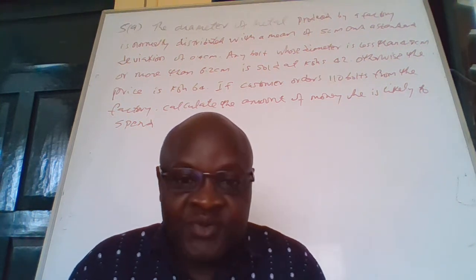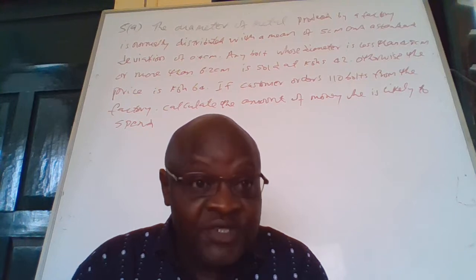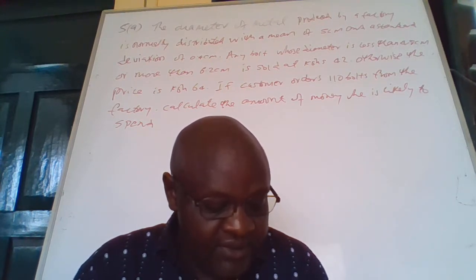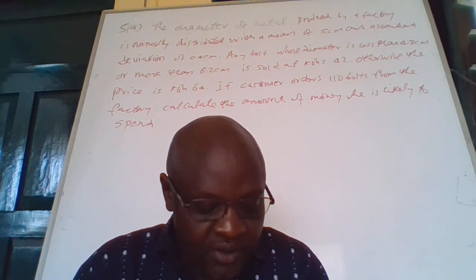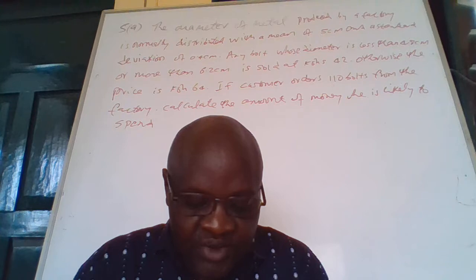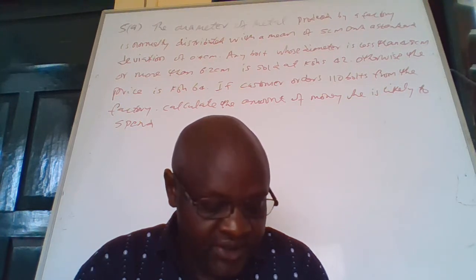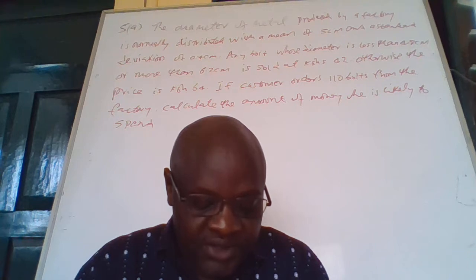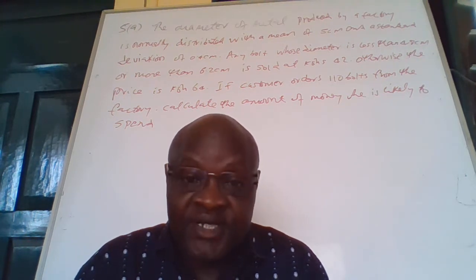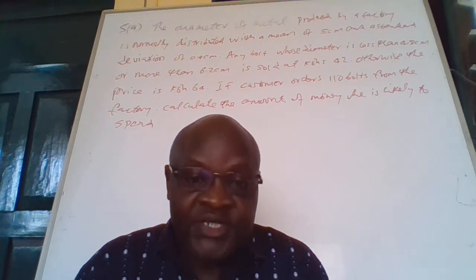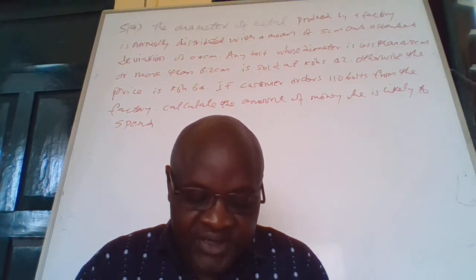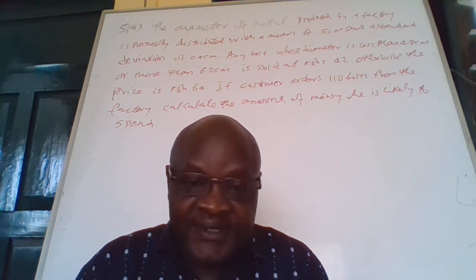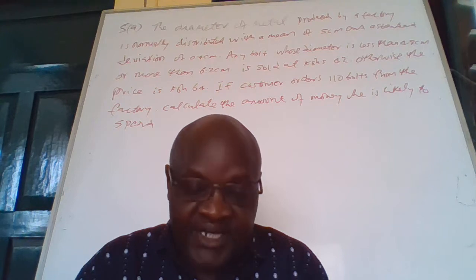Good evening and welcome to this discussion. We have this question: the diameter of metal bolts produced by a factory is normally distributed with a mean of 5 centimeters and a standard deviation of 0.4 centimeters. Any bolt whose diameter is less than 4.8 centimeters or more than 6.2 centimeters is sold at 42 Kenya shillings; otherwise the price is 64 Kenya shillings. If a customer orders 110 bolts from the factory, calculate the amount of money they are likely to spend.